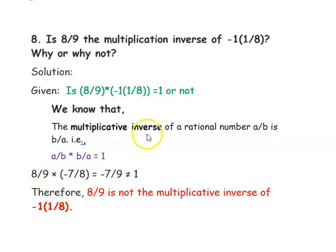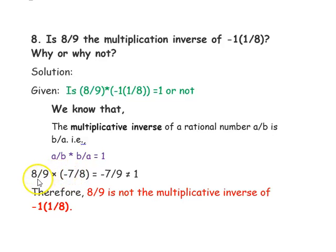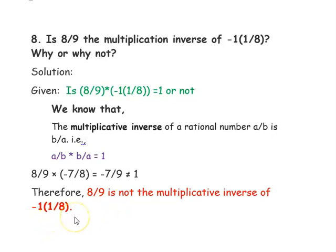The given rational number is 8/9, and it is multiplied by -1⅛, which is a mixed number. We convert it to a fraction: (-1 × 8) + 1 = -7, so -1⅛ = -7/8. Multiplying numerator and denominator separately: (8 × -7) / (9 × 8) = -7/9. Since this is not equal to 1, therefore 8/9 is not the multiplicative inverse of -1⅛.